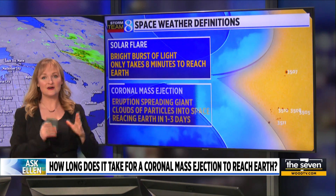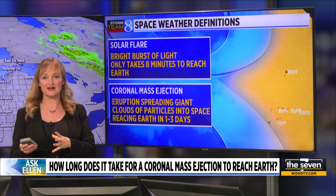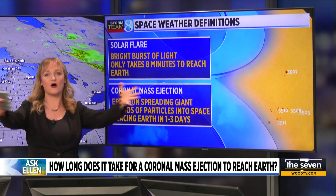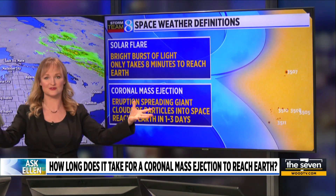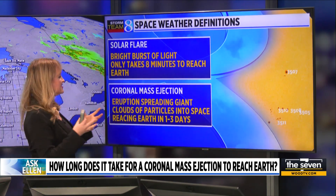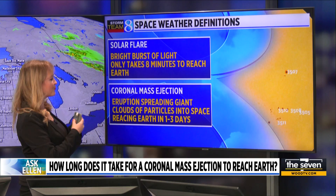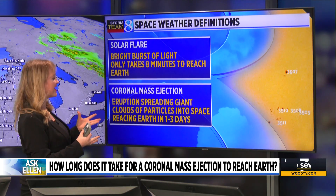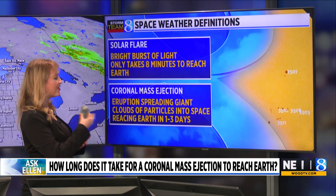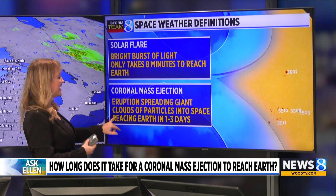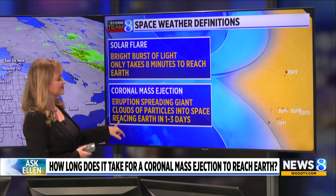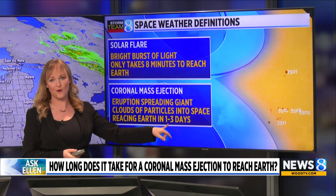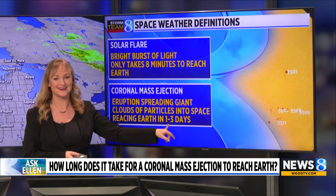To contrast, a coronal mass ejection is what gets kicked off of the sun's surface. It's basically an eruption into space of a giant cloud of particles, and that reaches Earth in about one to three days according to NASA.